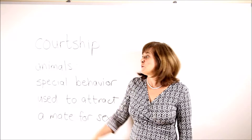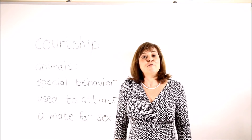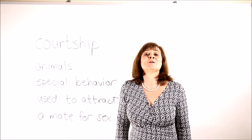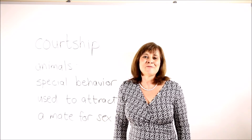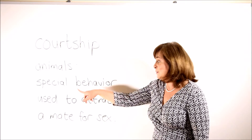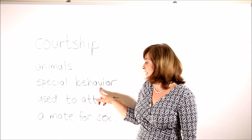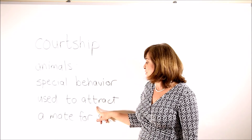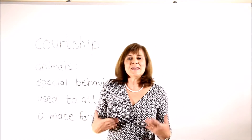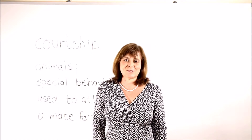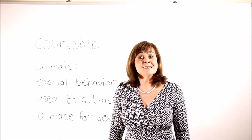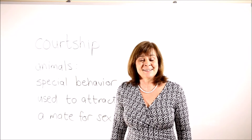Our next word is 'courtship'. For humans, courtship is that period during which two people get to know each other better before they make their relationship more permanent. In animals, it refers to special behavior that they use to attract a mate for sex. This behavior can take different forms — for example, some animals will use vocalizations, sounds, to attract mates.